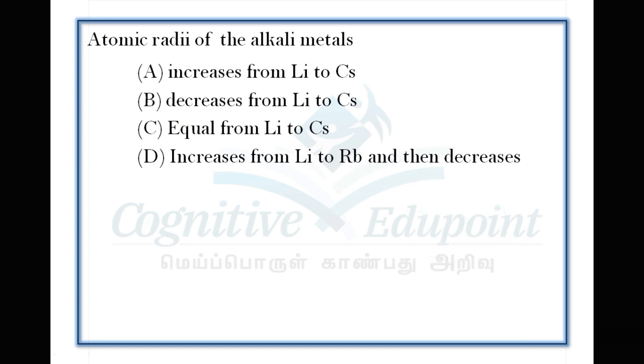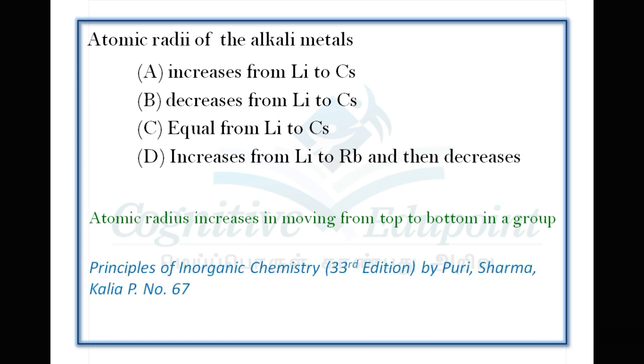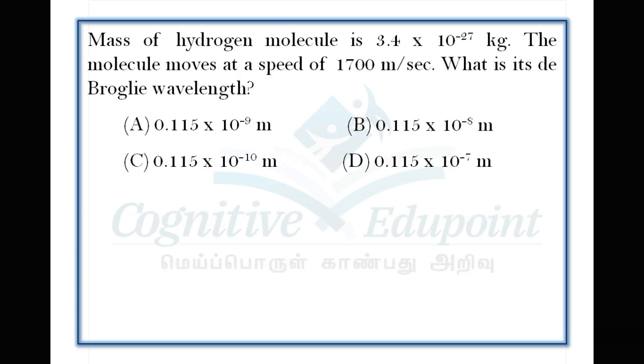Next question: Atomic radii of the alkali metals. This is about periodic properties. When you move from top to bottom of the group, atomic radius increases because electrons are added in subsequent shells. Correct answer is A.